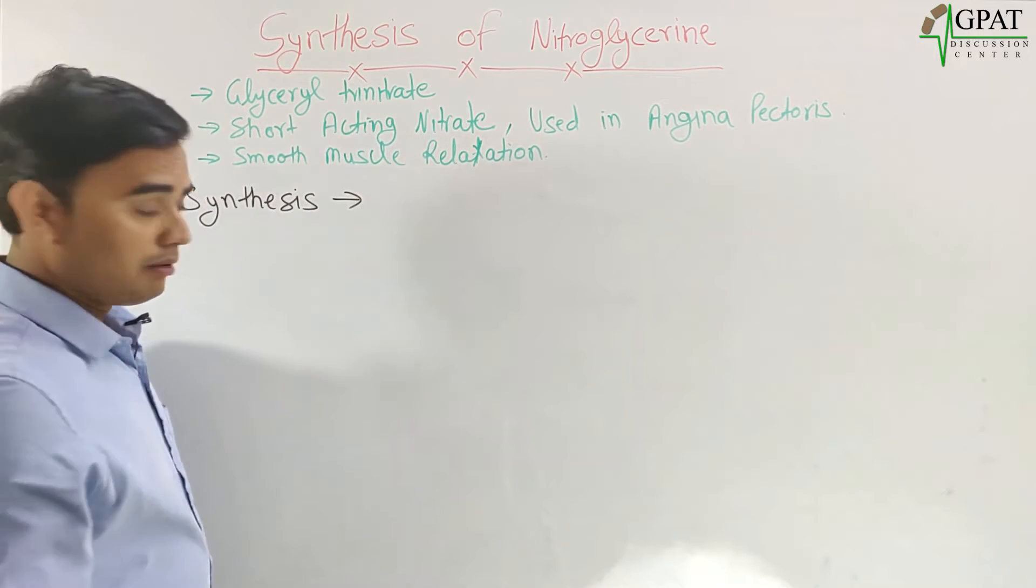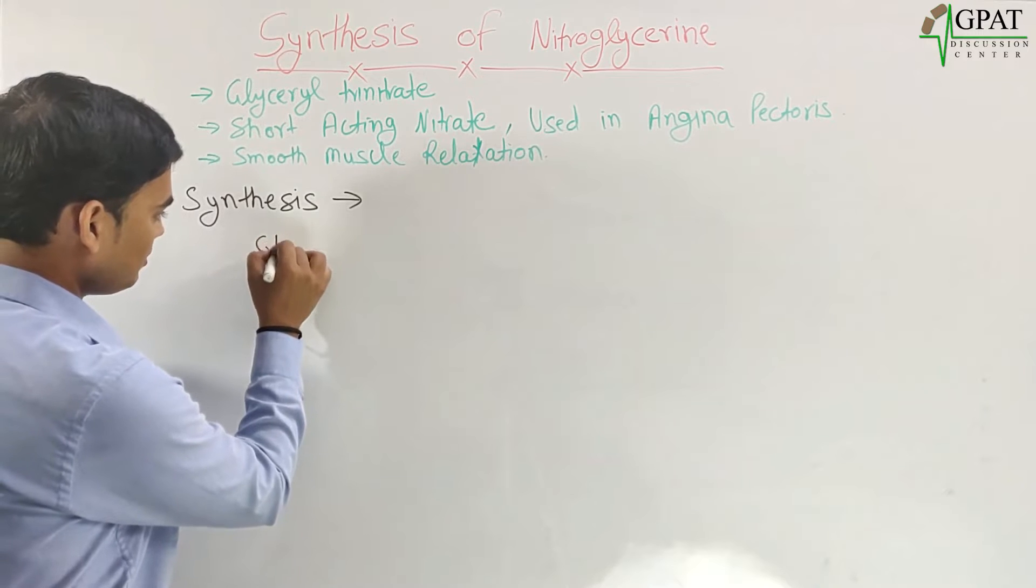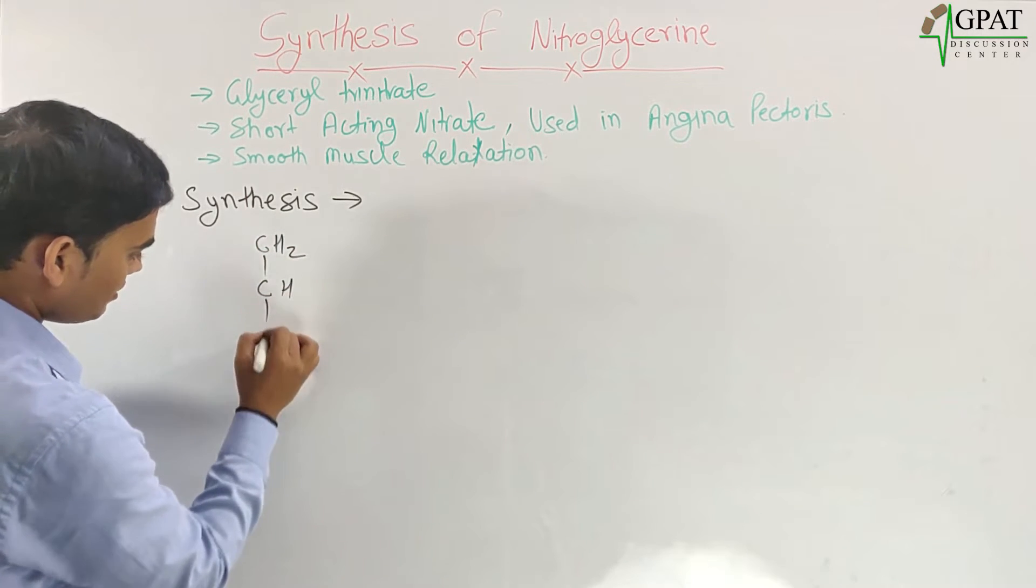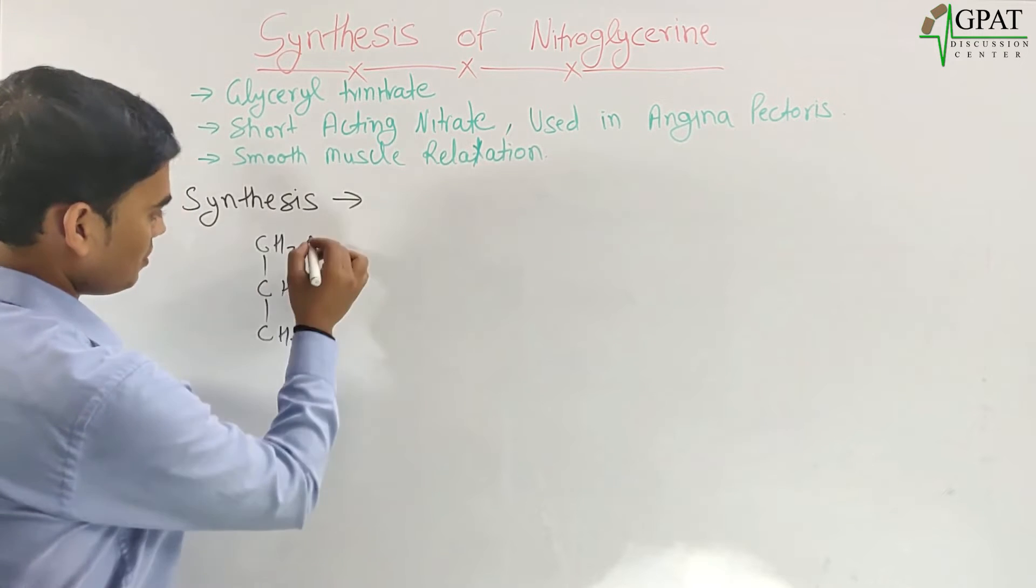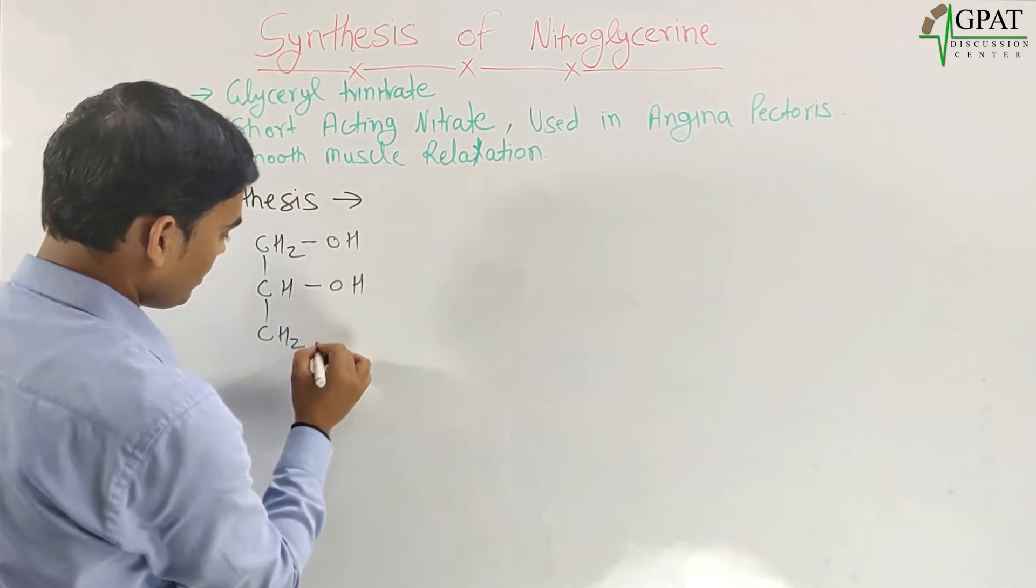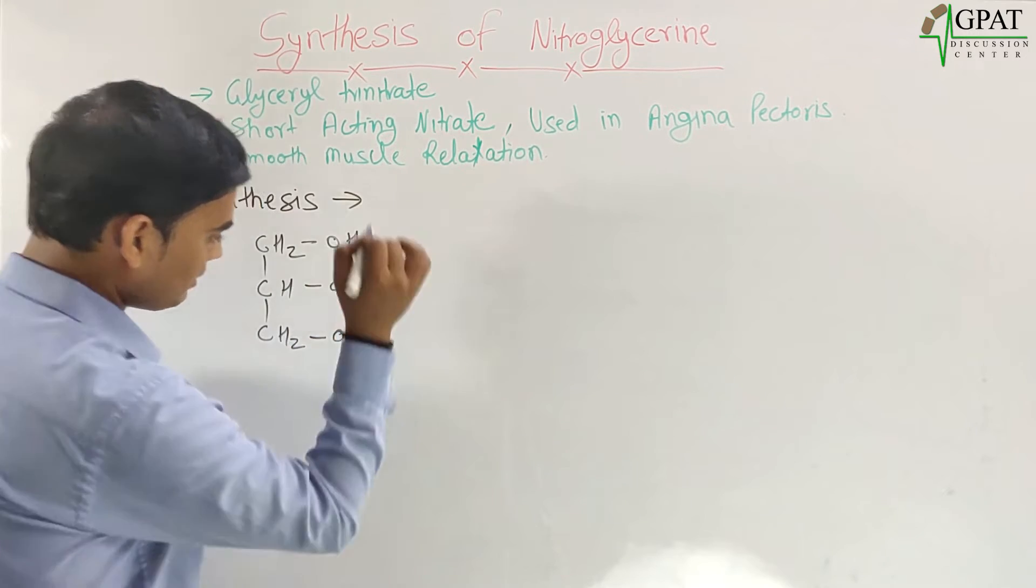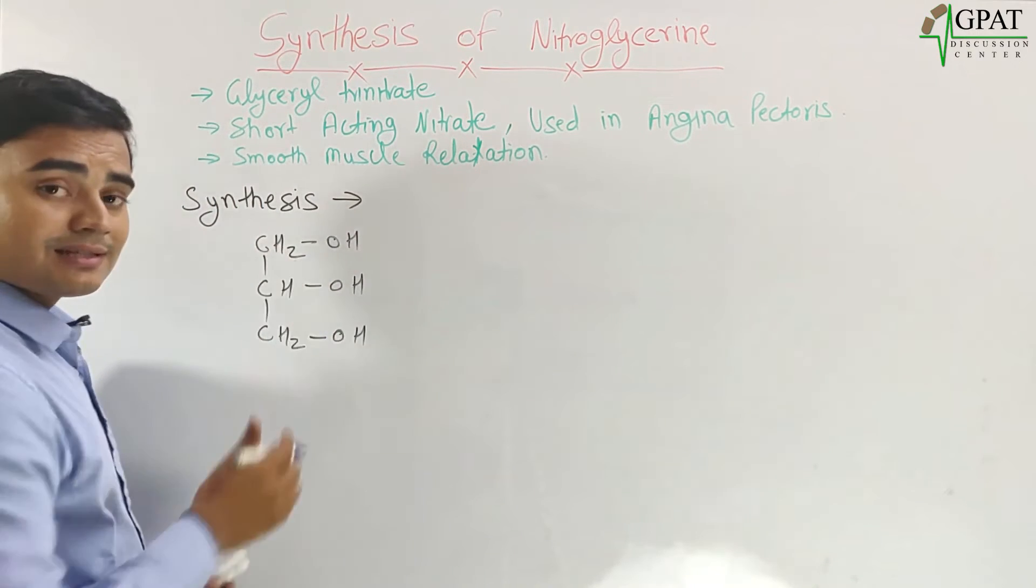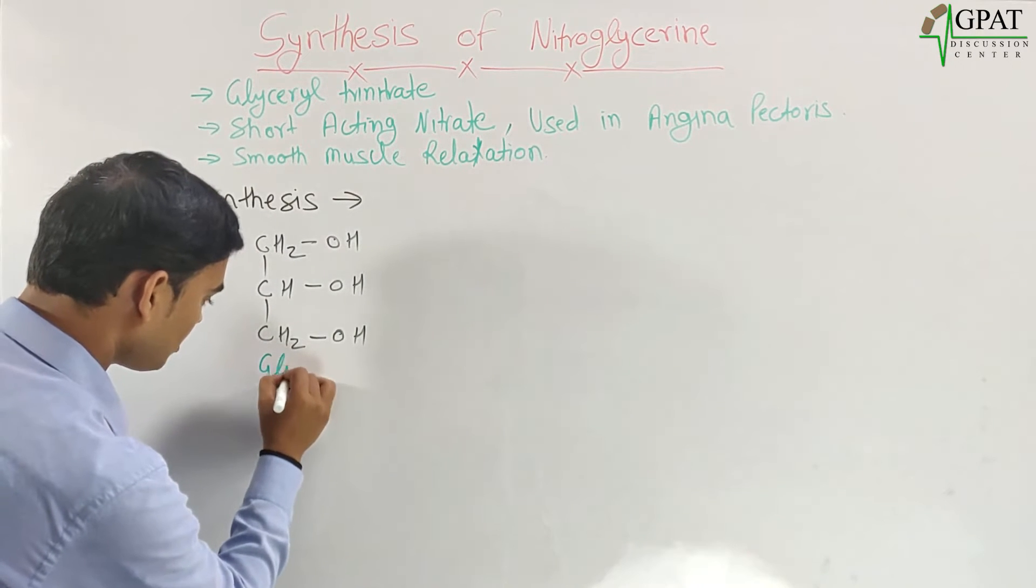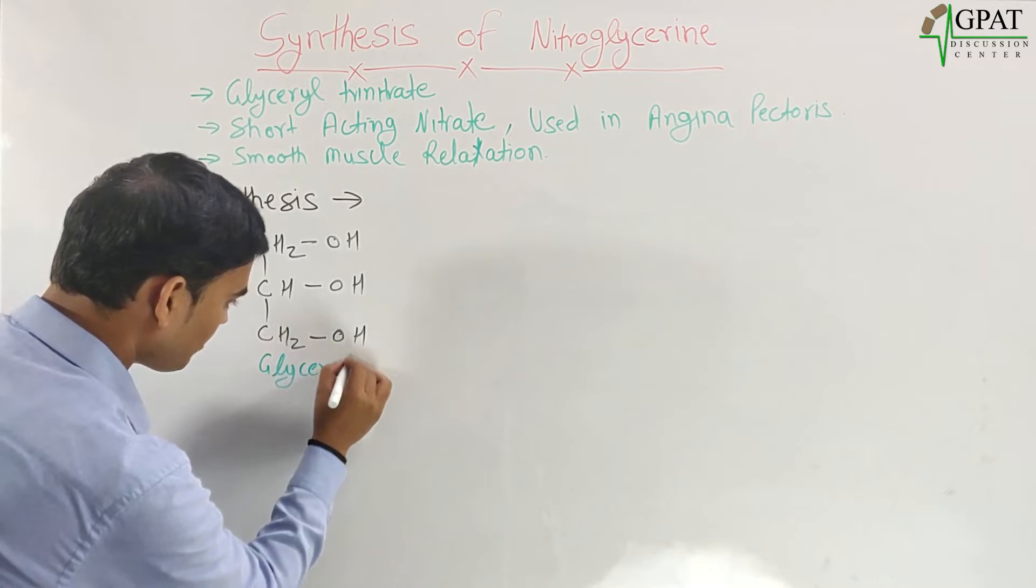Glycerol mainly has CH2-CH-CH2. Here it has an OH group, here one more OH group, and here the third OH group. So this is the compound which is known as glycerol.